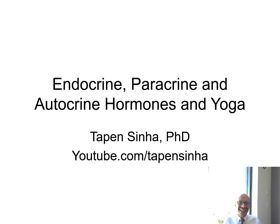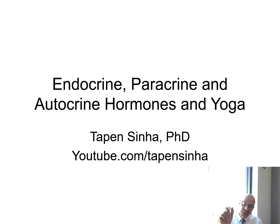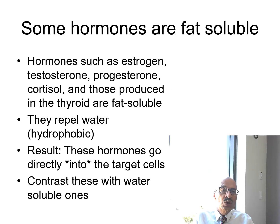How does a particular cell know what to do, when to multiply, and so on? It is actually getting a signal through certain hormones, and these hormones are secreted principally through endocrine, paracrine, and autocrine glands. They send out signals to specific cells on how to go about doing things.